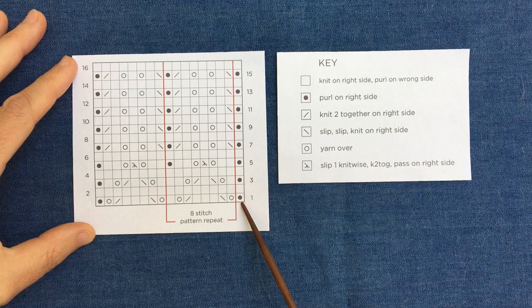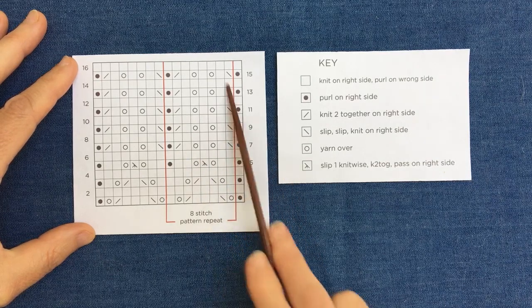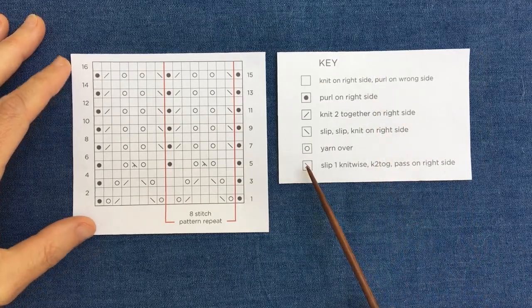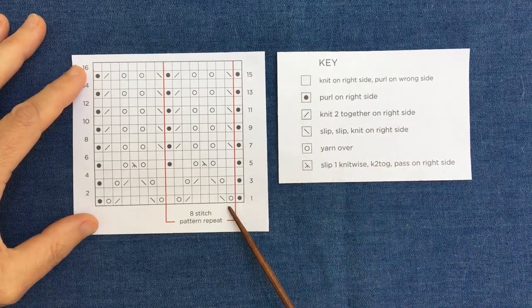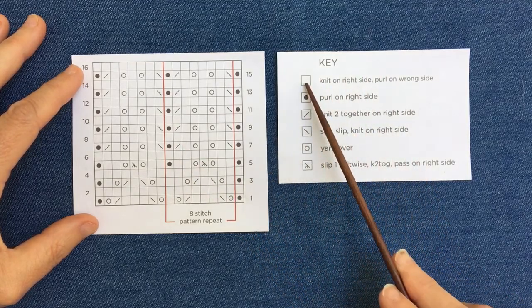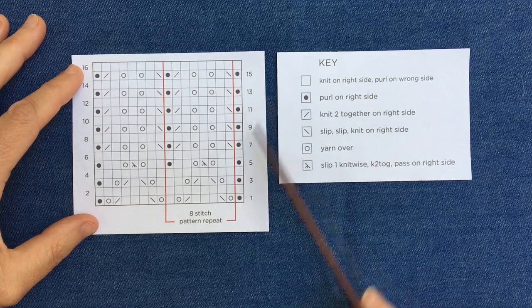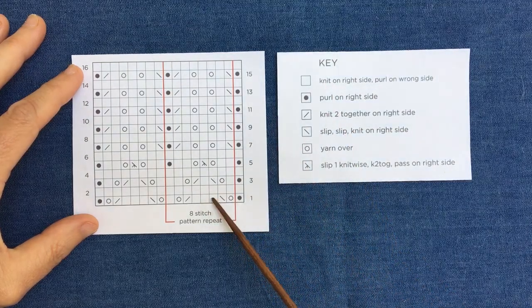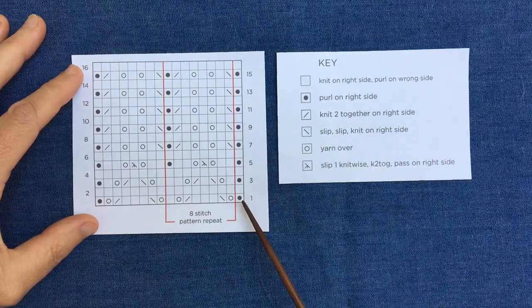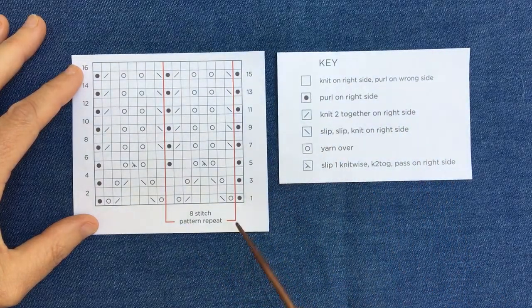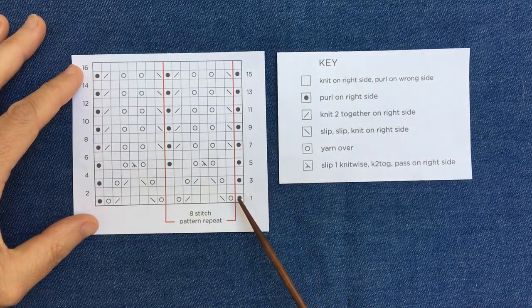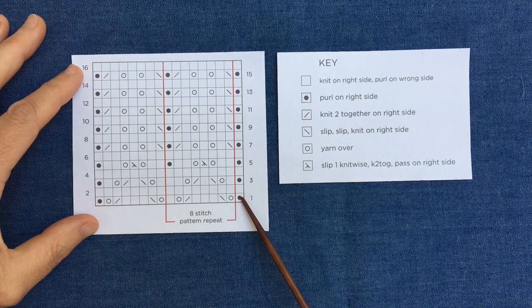Alongside your chart you will also be given a key, so like a map, these will indicate what the different symbols actually mean. So looking at our key for this pattern, the first box is empty, so that means every time you see an empty box on the right side it's a knit stitch and on the wrong side it's a purl stitch. This black dot is purl on the right side and you'll see it's only ever written on the right side of your knitting, so every time you see a black dot you put a purl stitch in.